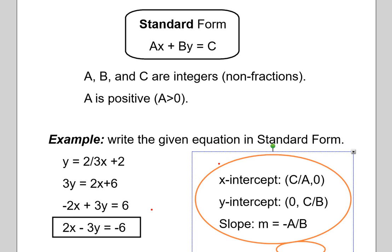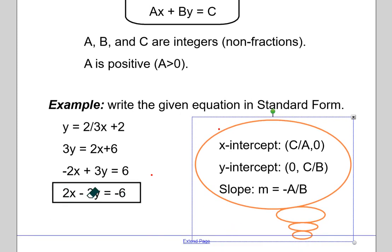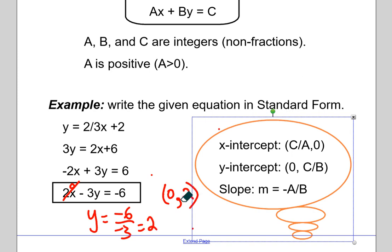Standard form is sometimes quite useful. When you are given a line and asked to graph it or find the intercepts, sometimes it's easy to identify intercepts from standard form. If you plug in zero for X, that cancels out the X term and you have a coordinate with X equal to zero. Then if you divide both sides by negative 3, you get Y equals negative 6 divided by negative 3, which is positive 2. So you know your Y intercept. Notice that what we actually did was divide C by B, so C over B gives you the Y intercept.